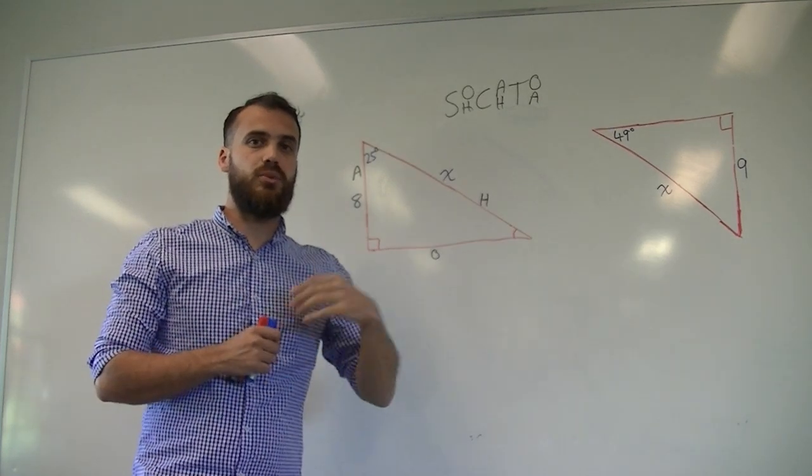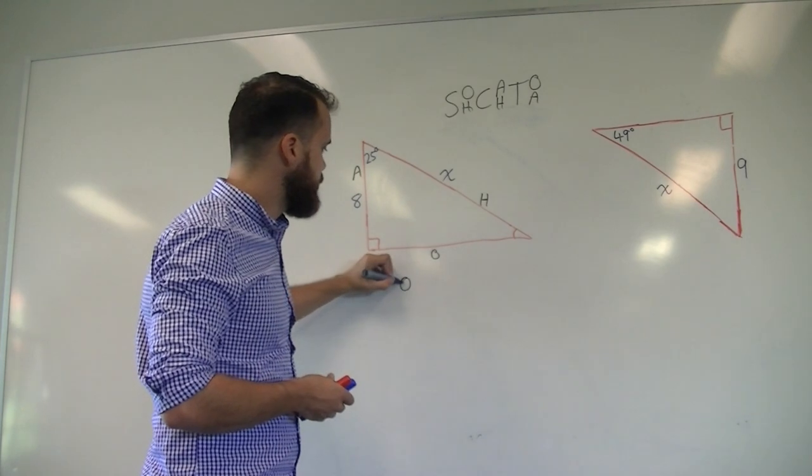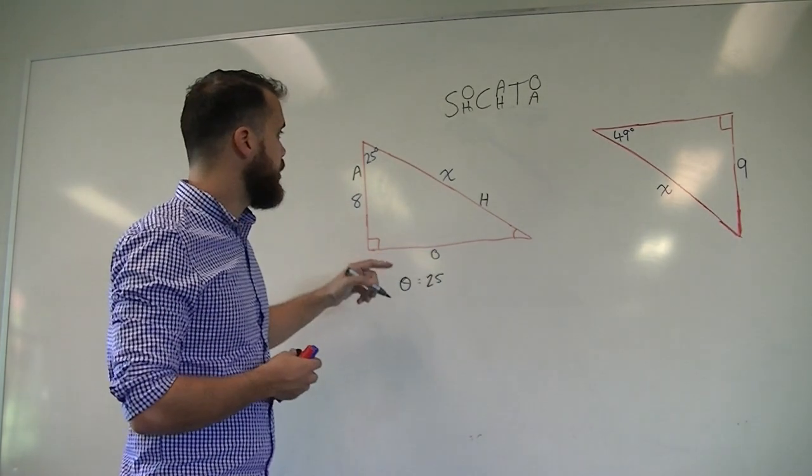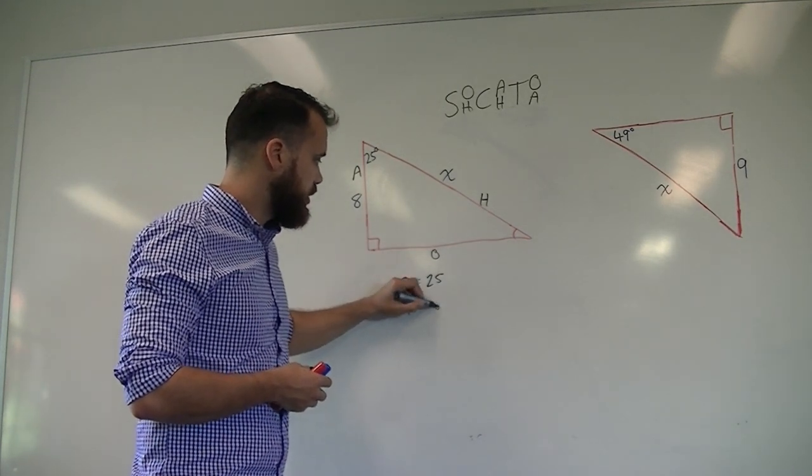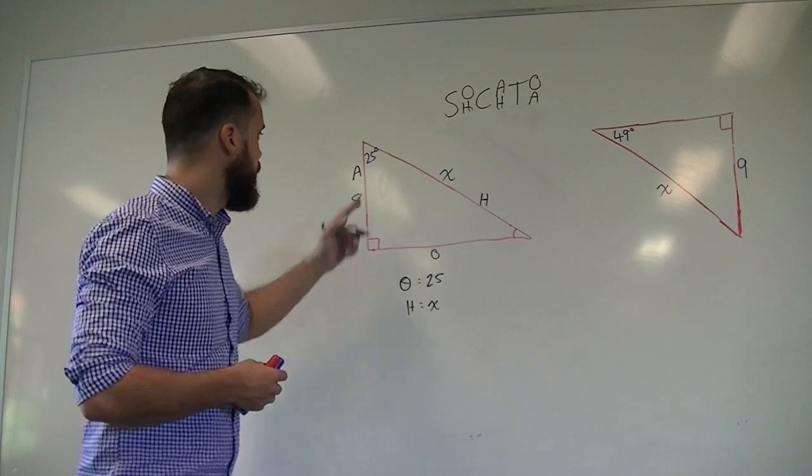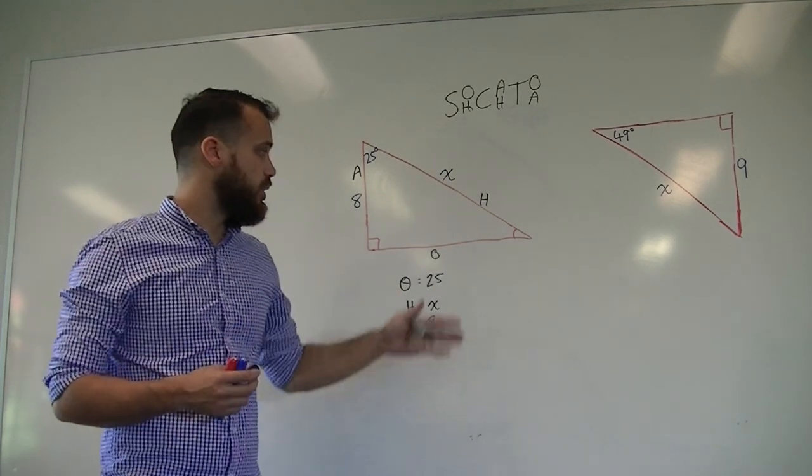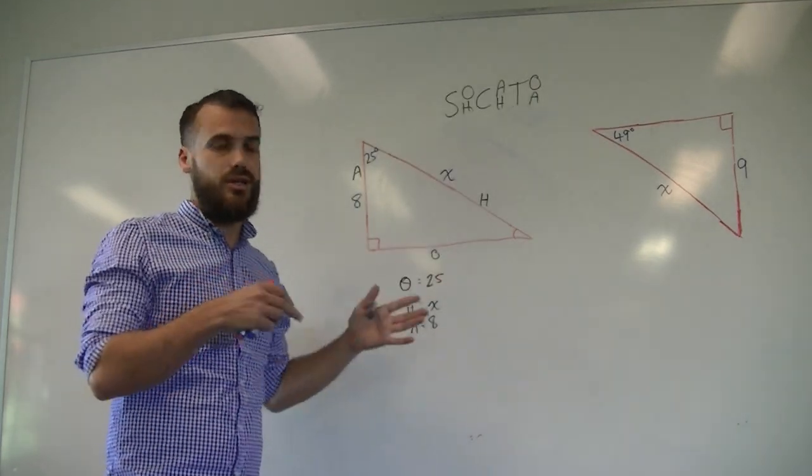Write the summary. Things that we know and things that we want to know. We know that our angle of interest is equal to 25. We know that our hypotenuse is x and we know that adjacent is 8. Now bear in mind there is an opposite side here, but we're not interested in it. We don't know what it is and we don't want to know what it is, so who cares?